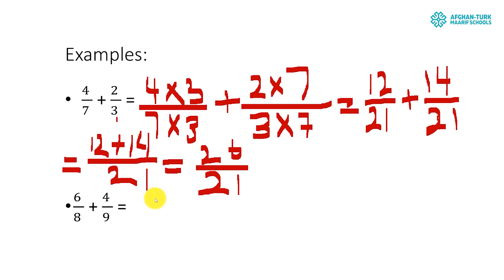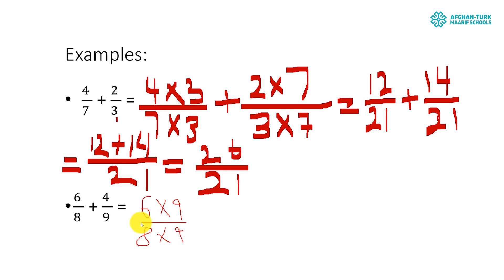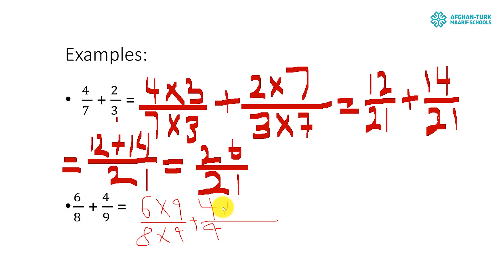Here is one more example. Our first fraction is 6 over 8, and we multiply its numerator and denominator by the second denominator, which is 9. So 6 times 9 over 8 times 9. Then the second fraction is 4 over 9, and we multiply it by the first denominator 8: 4 times 8 over 9 times 8.